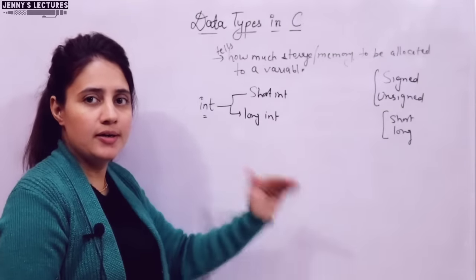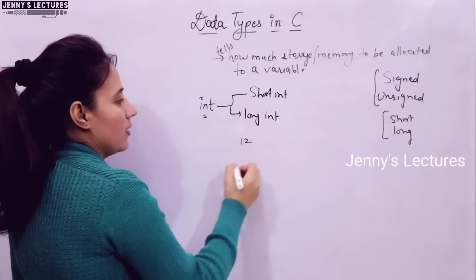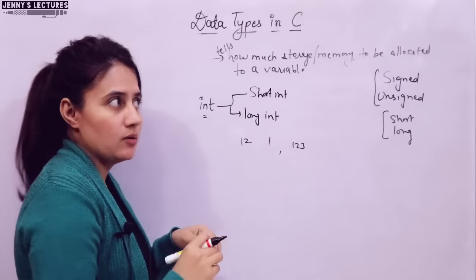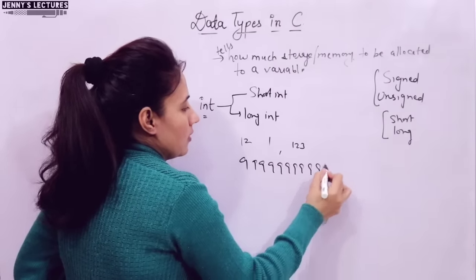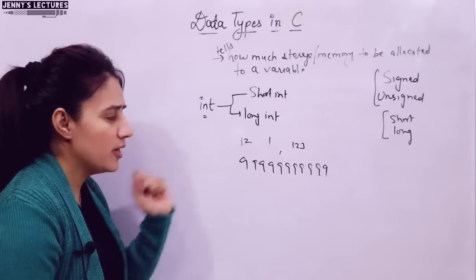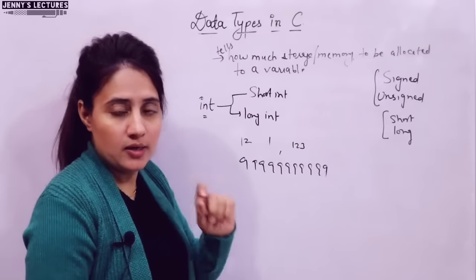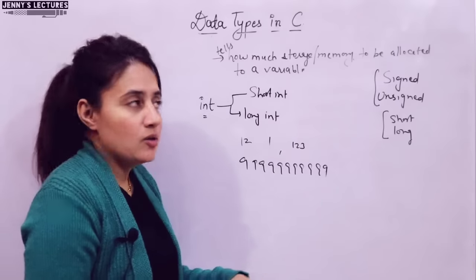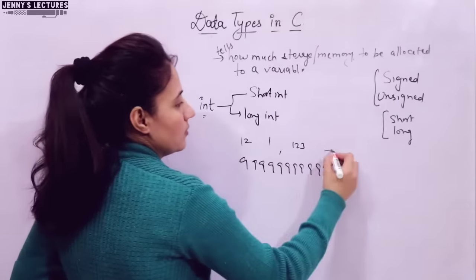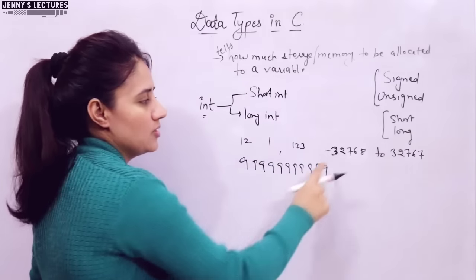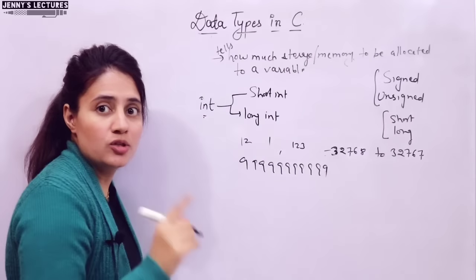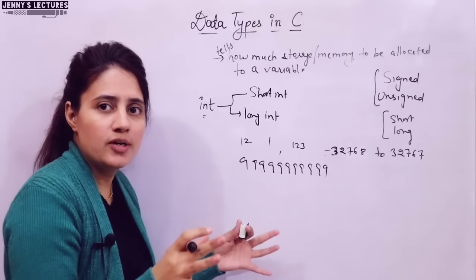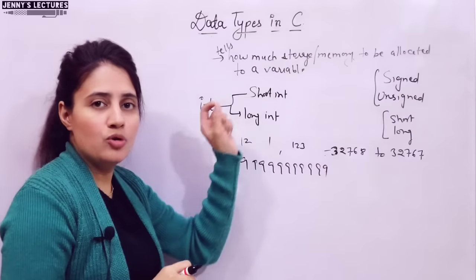Int stands for integer. You can store integer values here — like 12, 1, 2, 3. Now what is the range of this integer? It depends on the machine you are using — whether you are using a 16-bit, 32-bit, or 64-bit machine. On a 16-bit machine, the range of signed integer is -32768 to +32767. By default, if you say simply int, it means signed integer. Signed means you can put negative values also, positive also. But if you specify unsigned int, then you can put only positive values — no sign is allowed. And the range of unsigned integer is 0 to 65535.